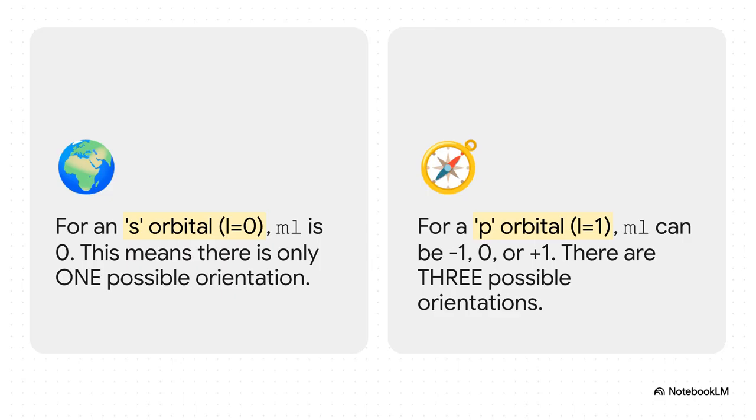And here's exactly how that works. For an s orbital, where L is 0, ML can only be 0. I mean, that makes perfect sense, right? How many ways can you orient a sphere? Just one.